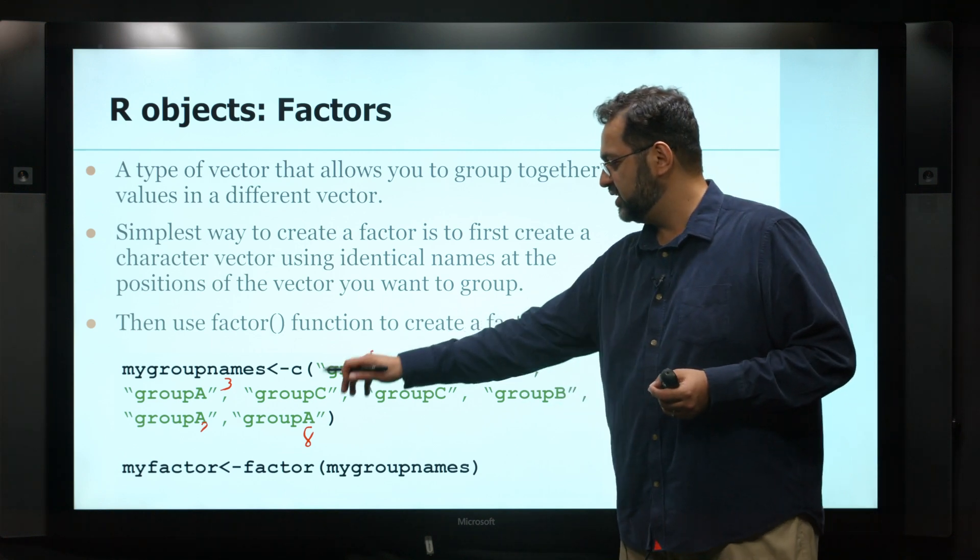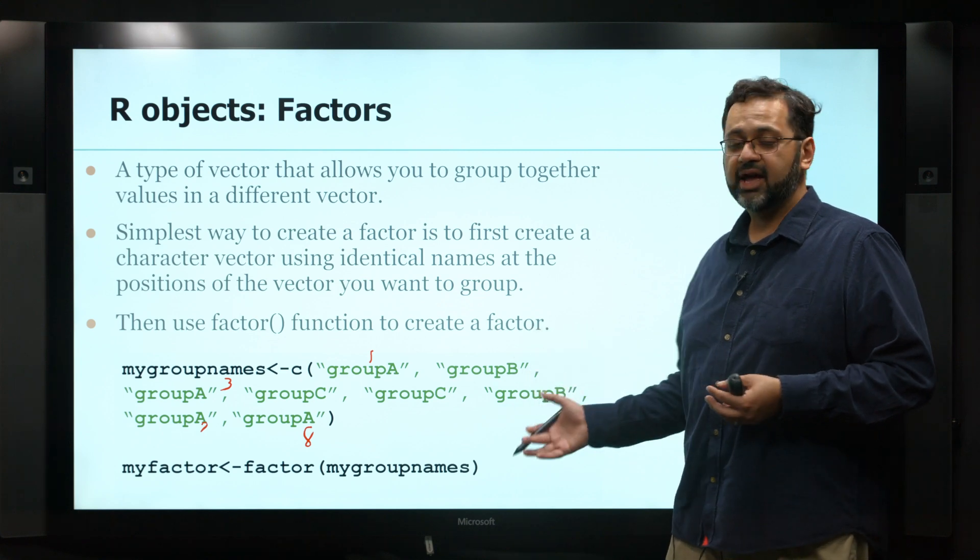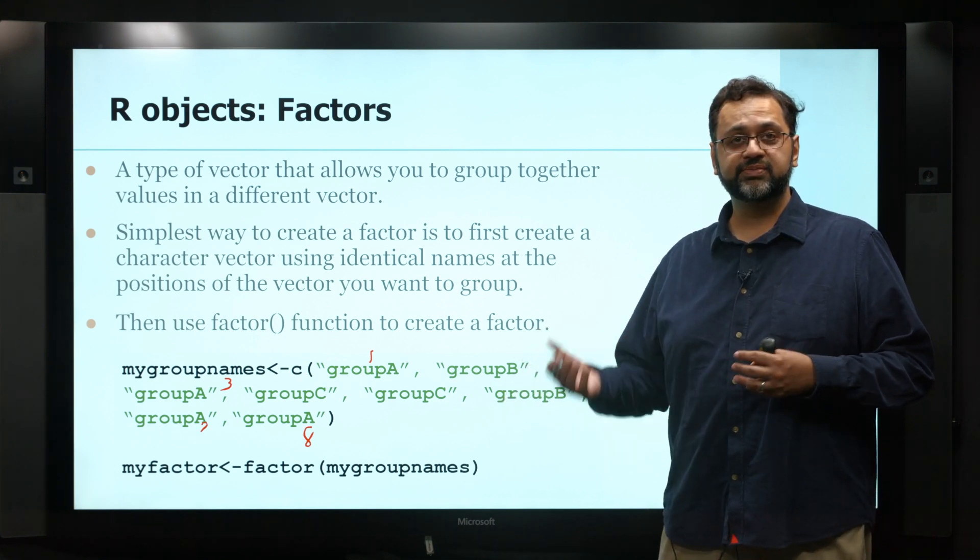It will take the 1, 3, 7, and 8 and give you an average for group A. It will do a group average for group B and average for group C and so on.